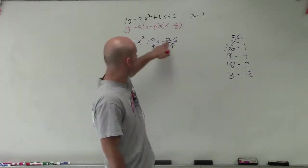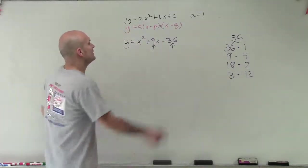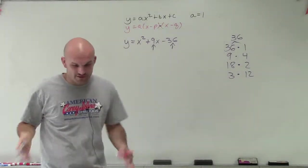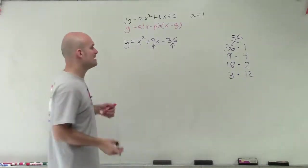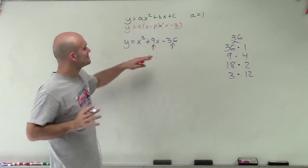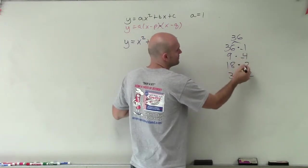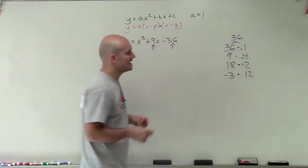Now since this is negative, one of these factors has to be negative. What's helpful is: since one has to be negative but they're going to add up to a positive number, the larger number is the one that has to be positive. Therefore, whichever the smaller number is has to be the negative.